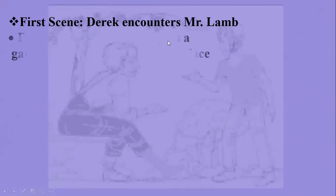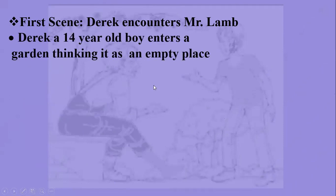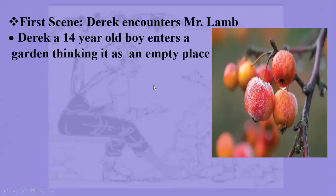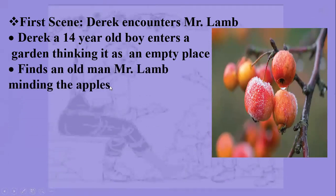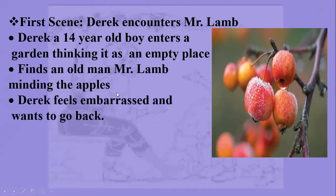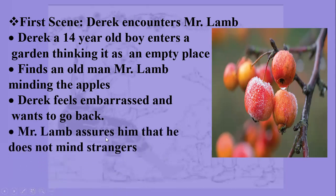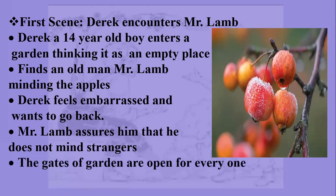In the first scene, Derek encounters Mr. Lamb. Derek, a 14-year-old boy, enters a garden thinking it is an empty place — there you can see crab apples. He finds an old man, Mr. Lamb, minding the apples. Derek feels embarrassed and wants to go back, as initially he thought no one was there. But when he sees the old man, he is really embarrassed. Mr. Lamb assures him that he does not mind strangers — the gates of the garden are open for everyone.